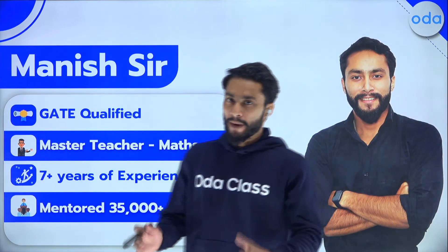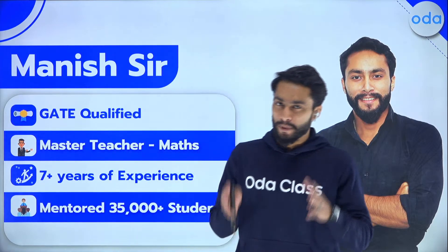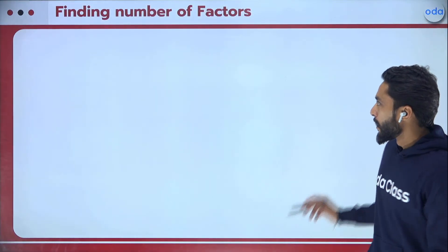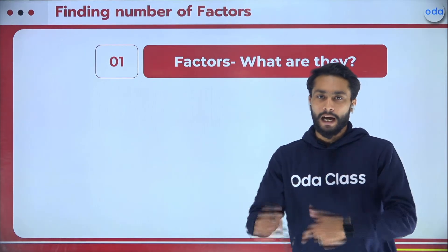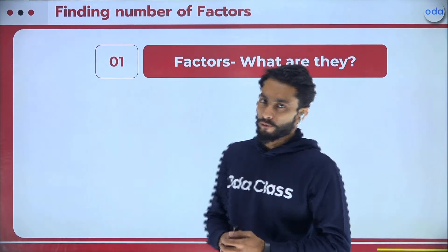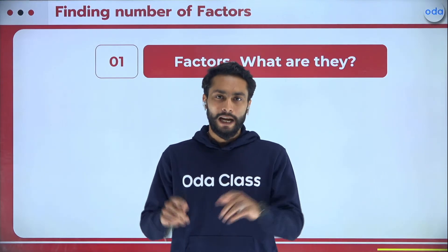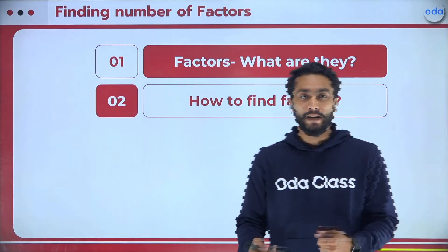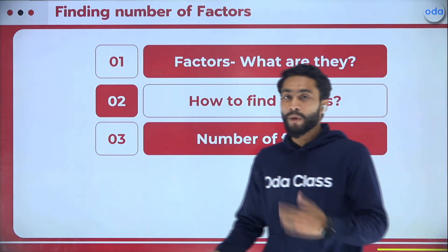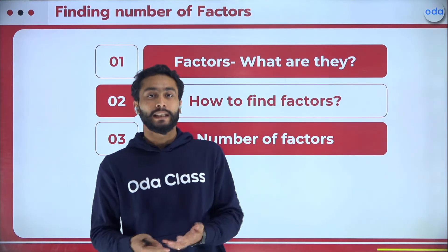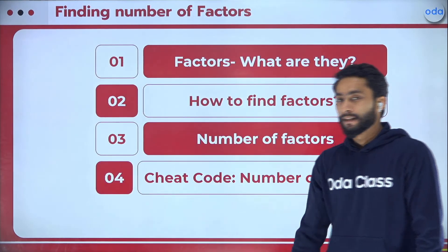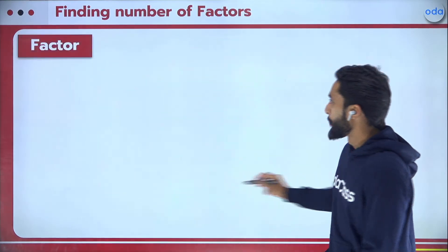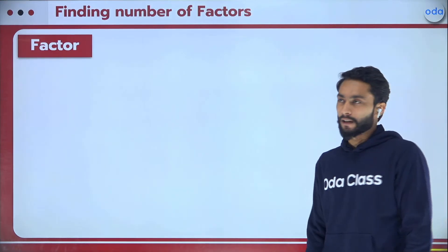Today's topic is how to find the number of factors of 20,000 in just 20 seconds. We are going to study four things: first, what are factors; second, how to find factors; third, number of factors; and fourth, there is a cheat code — since you have come to ODA Class, there has to be a cheat code!